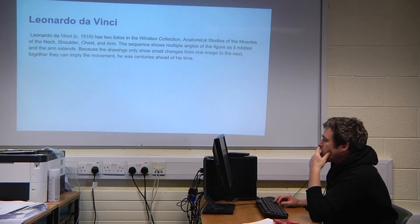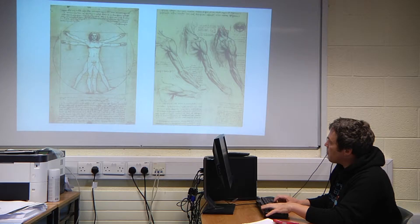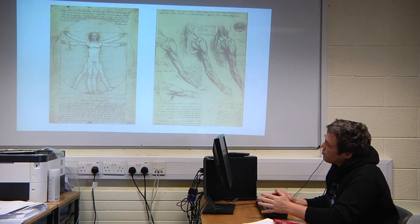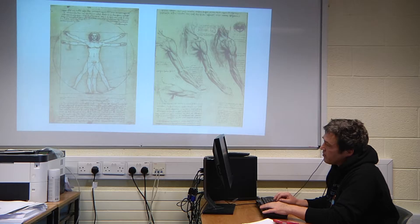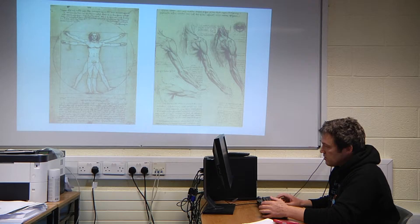Leonardo da Vinci, around 1510, did two folios now in the Windsor collection — anatomical studies. He showed the movement of the body, particularly subtle movements, and animation was one of the things he was looking at. He also did drawings of a model similar to the magic lantern, two hundred years before it, though it did not happen in his lifetime.